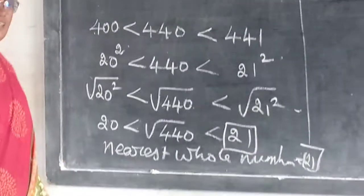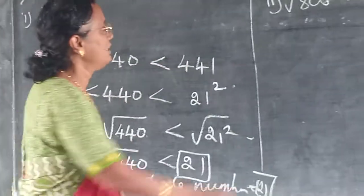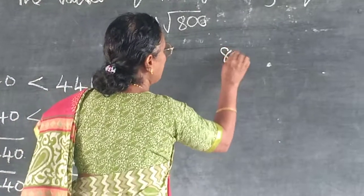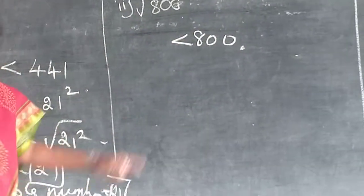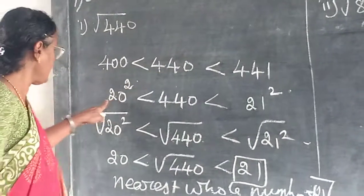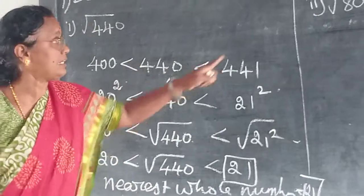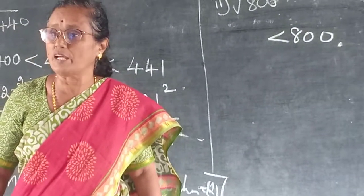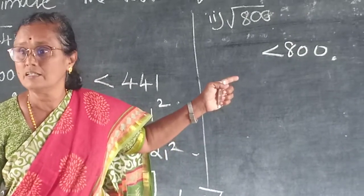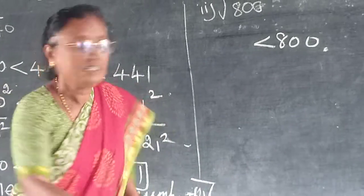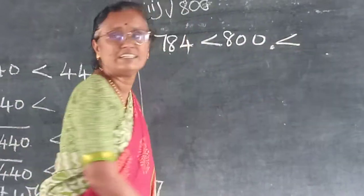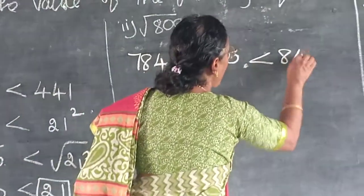Root of 20 square. Root of 21 square. Root of 20 square is what? 20. Root 440 less than 21. So, what is the nearest whole number? 21. Very good. Nearest whole number equal to 21. Next one, √800. Before this, what square number you will have? 784. Very good. 784. Next one is? 841.